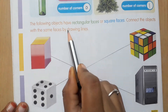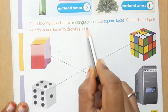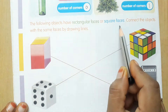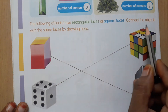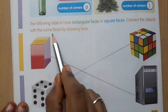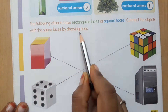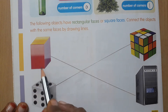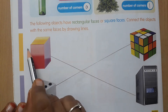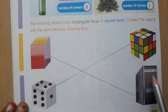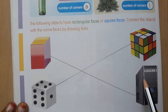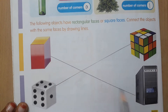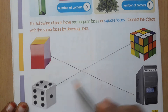The following objects have rectangular faces or square faces. Connect the objects with the same faces by drawing lines. This object has rectangular faces, and this object is also in rectangular faces, so match these two. And these two have square faces.